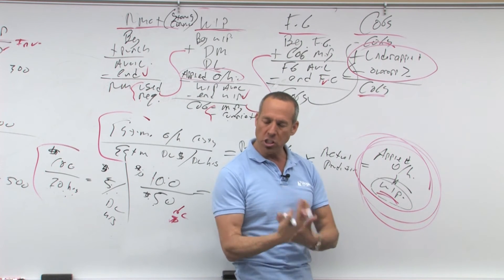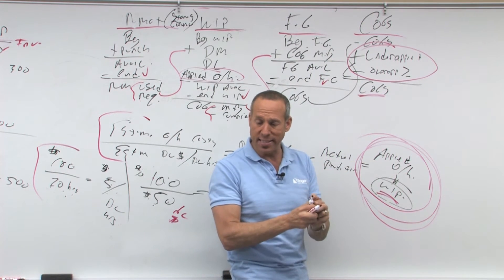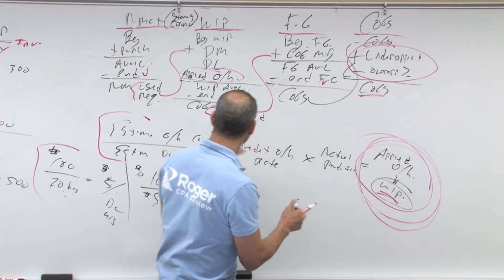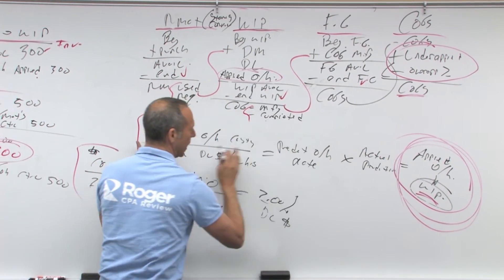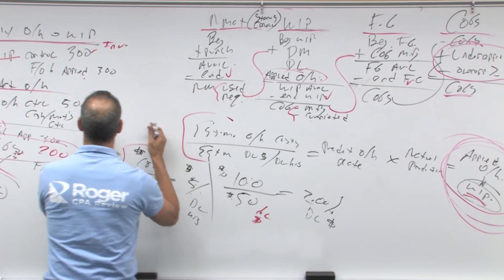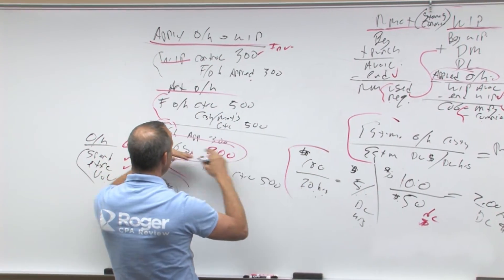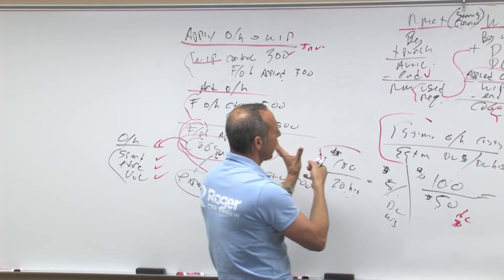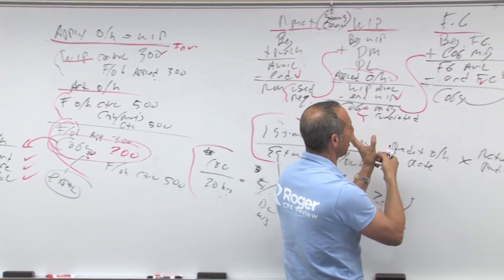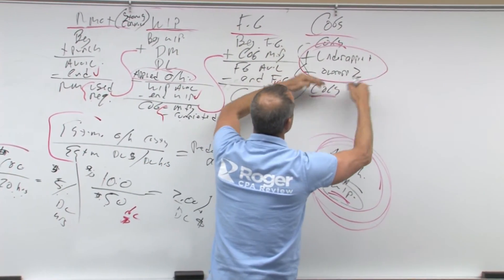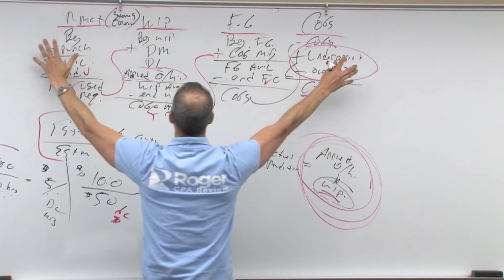So again, to understand the flow of the cost system, that's how it all ties together. But I want you to see how this predetermined overhead rate, that ties into coming up with this entry. Here's actual, here's the difference, that's under applied, that's where we're increasing our under applied for cost of goods sold over here. This is the flow of the system.